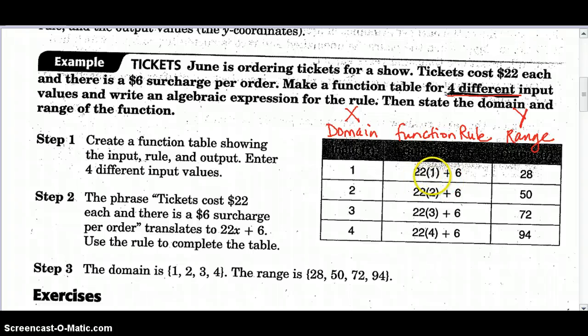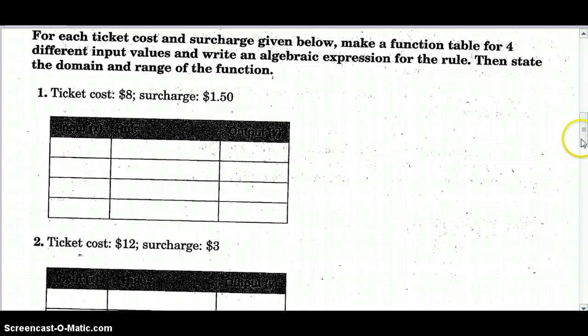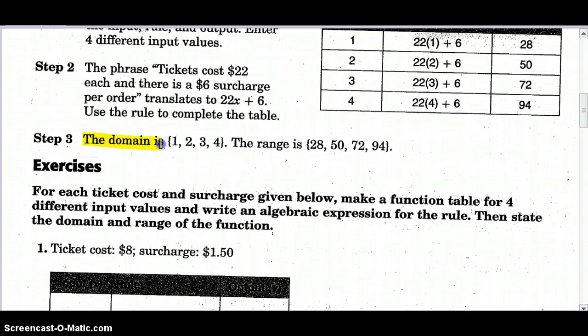So $22 per ticket plus a $6 surcharge. So one ticket is $22 plus six makes $28. Two tickets, you'd have $44 plus six is $50. Three tickets would be $66 plus six is $72, and so on and so forth. And then, you'll notice here, they stated their domain and their range. And they're in consecutive order, but let's get in the habit of looking and making sure our domain and range are always from least to greatest. And all of the domain values, these are your x and these are your y.